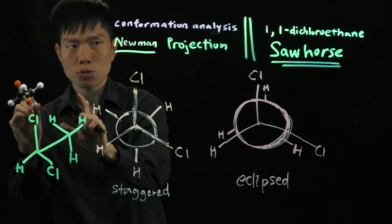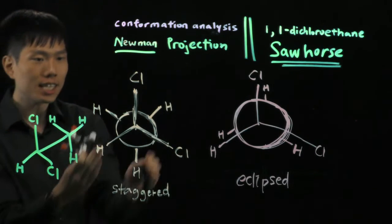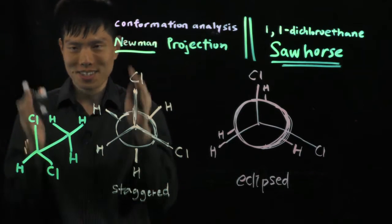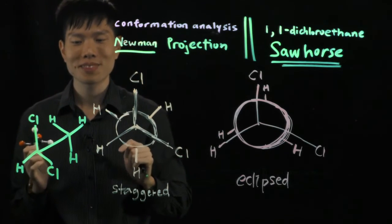So now suppose you take this Sawhorse and you look through this way, through this bond here. What you are seeing is actually the staggered conformer - right at the front, Newman projection through the carbon-carbon bond.